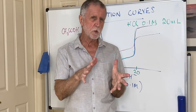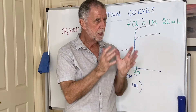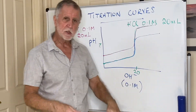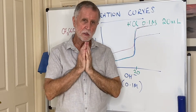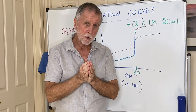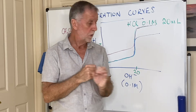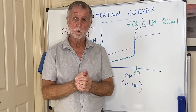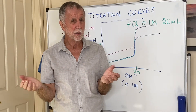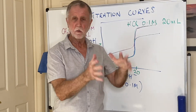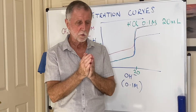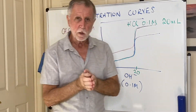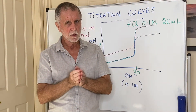What about using indicators to detect the equivalence point? They may also ask you the difference between equivalence point and end point. The equivalence point is where the acid and the base completely cancel each other out. The end point is the value when the indicator changes color. They're effectively the same thing but defined slightly differently.